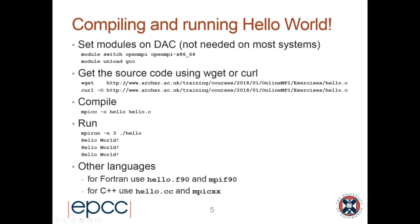You can get the source code directly using wget, or on a Mac you can use curl since wget isn't installed by default. Then you compile with mpicc -o hello hello.c. If you use mpirun -n 3 ./hello you get three Hello Worlds. The exercise last week was to add MPI so each rank says 'hello, I am rank zero/one/two out of three'. For other languages: Fortran uses hello.f90 with mpif90, C++ uses hello.cc with mpicxx. I use C as the base example.